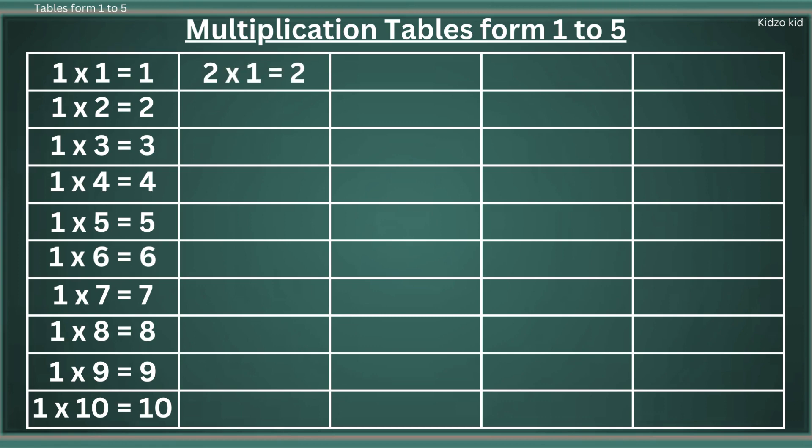2 1s are 2, 2 2s are 4, 2 3s are 6, 2 4s are 8, 2 5s are 10.